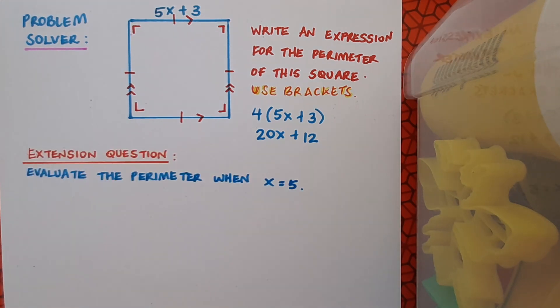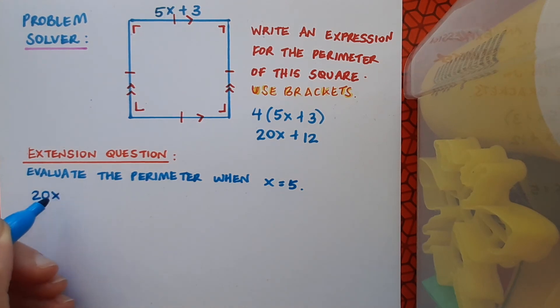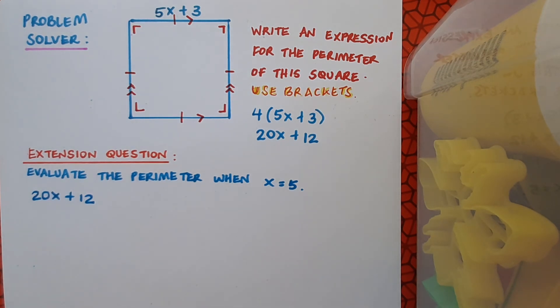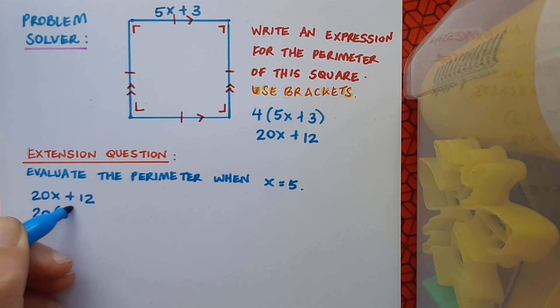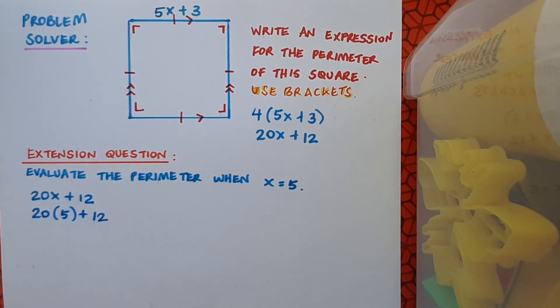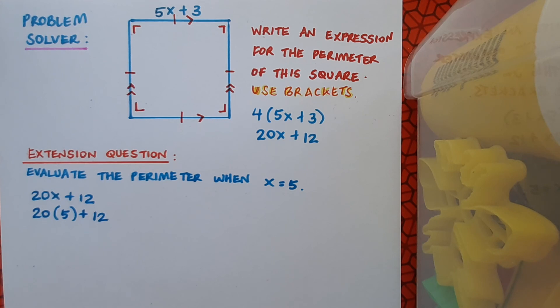Here's an extension question for you. Evaluate the perimeter of the square when x equals 5. Pause the video here, evaluate, and then play and check if you are correct. Well, I know the expression for the perimeter is 20x plus 12 and I'm being told to use x equals 5 so I'm just going to use substitution and replace the x with 5 in brackets, and I can then evaluate this and it's going to give me an answer of 112. I don't know what it's measured in if it's centimeters or meters or something else entirely so I'll use units at the end of my answer.